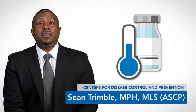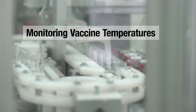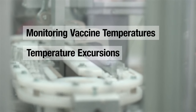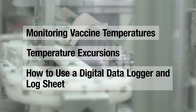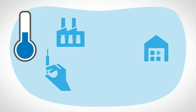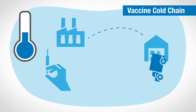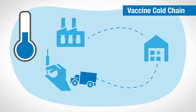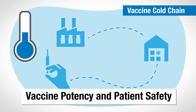When storing and handling vaccines, it's critical to have proper temperature monitoring equipment and procedures to maintain the cold chain and protect patients from receiving compromised vaccines. In this short video, you'll learn about monitoring vaccine temperatures, temperature excursions, and how to use a digital data logger and log sheet. Vaccines require a temperature-controlled environment until they are administered. This is known as the vaccine cold chain and includes all vaccine-related equipment and procedures. Maintaining the vaccine cold chain will ensure vaccine supply potency and patient safety.